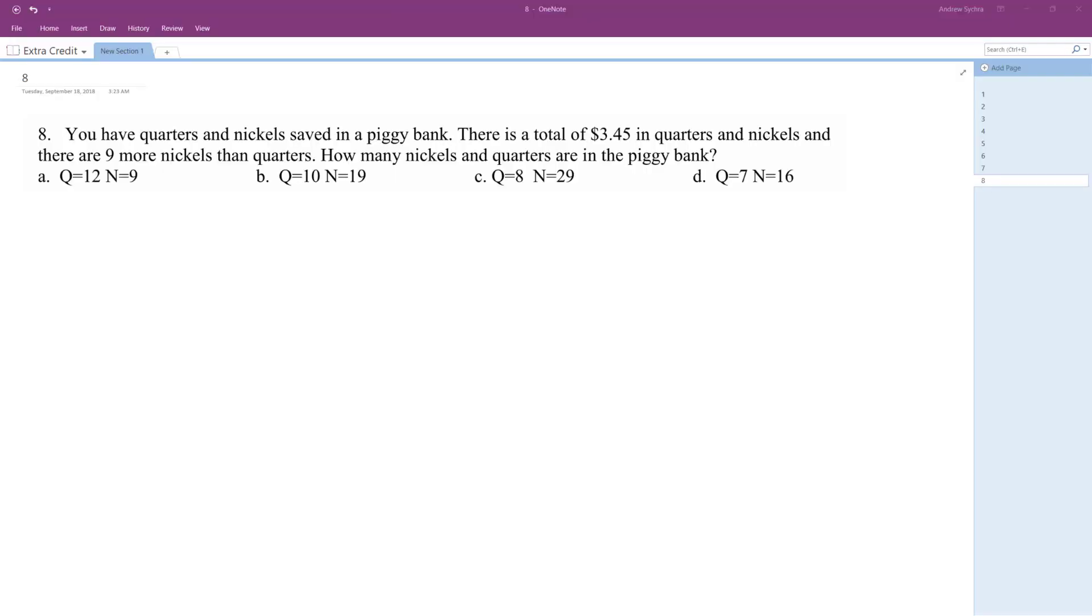You have quarters and nickels saved in a piggy bank. There's a total of $3.45 in quarters and nickels. There are nine more nickels than quarters. How many nickels and quarters are in the piggy bank?